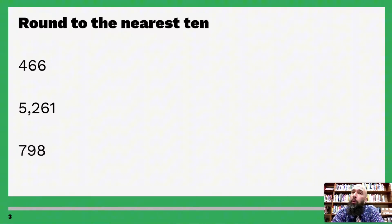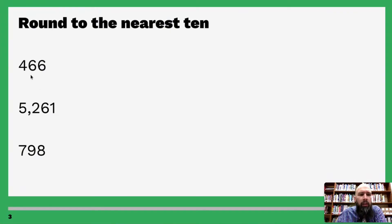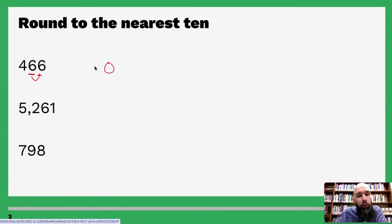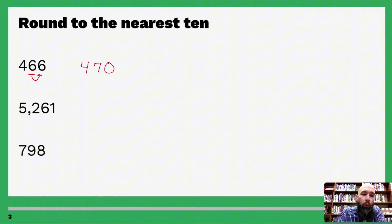Round to the nearest ten — let's do this a few more times. Here's my ones, here's my tens. Five or above, give it a shove; four or below, let it go. Looking at six — six is five or above — so we turn six into zero, and since six is five or above, that digit we're rounding to becomes seven. So four hundred and sixty-six rounds to four hundred and seventy.